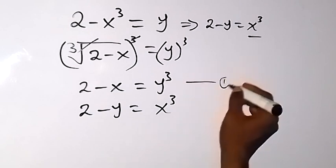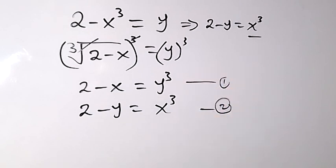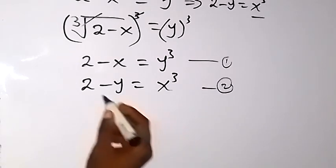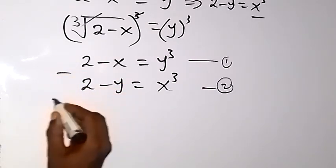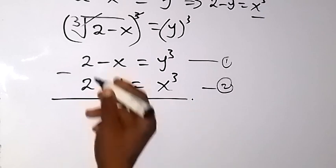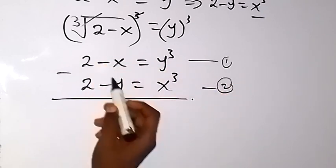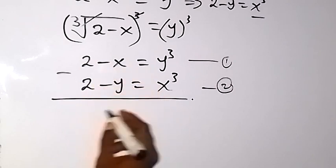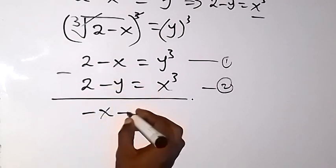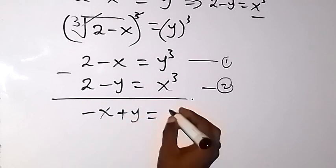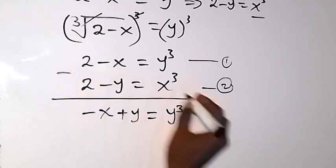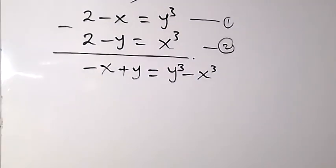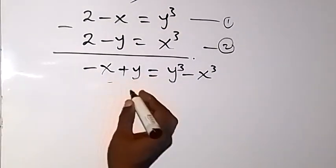Let's label these as equation 1 and equation 2, then try to eliminate by subtracting. When we subtract, 2 minus 2 cancels, and we have negative x minus negative y, that's minus x plus y, which equals y cubed minus x cubed.